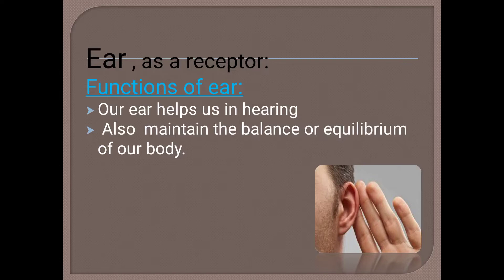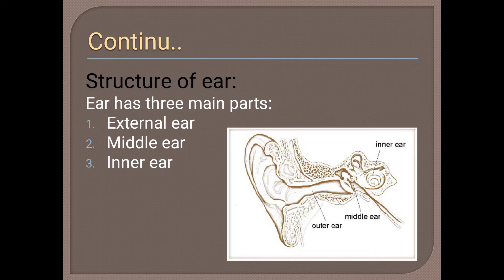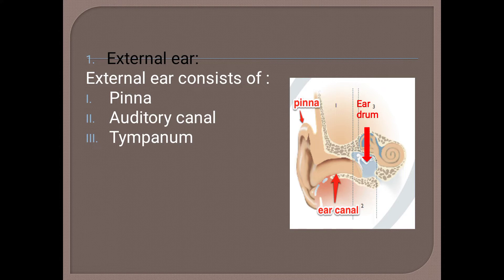Ear as a receptor: the functions of the ear — our ear helps us in hearing and it also maintains the balance or equilibrium of our body. The structure of the ear: the ear has three main parts — the external or outer ear, the middle ear, and the inner ear.